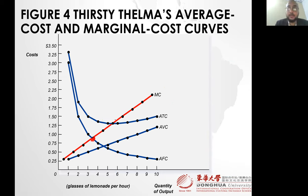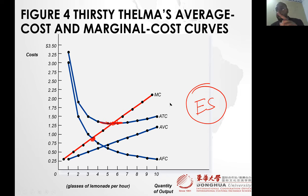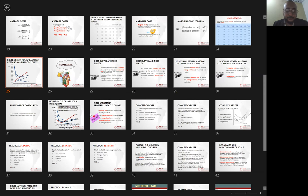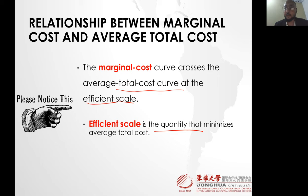The marginal cost crosses the average fixed cost and average total cost. Marginal cost crosses the average total cost at its minimum, which means efficient scale. Marginal cost is also upward sloping. The marginal cost curve crosses the average total cost curve at the efficient scale. The efficient scale is the quantity that minimizes average cost.